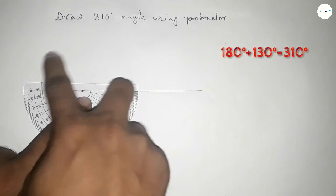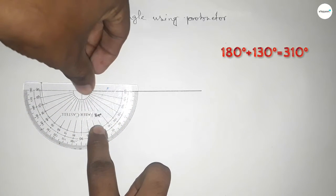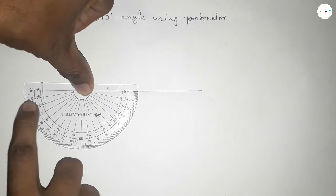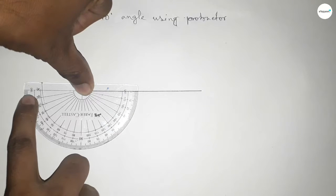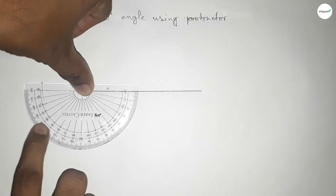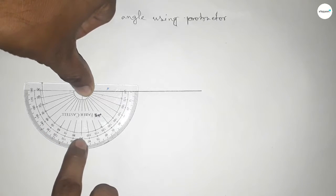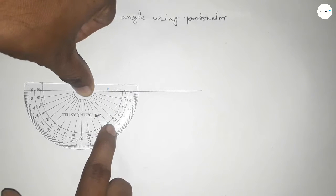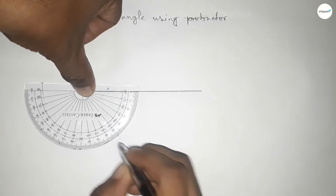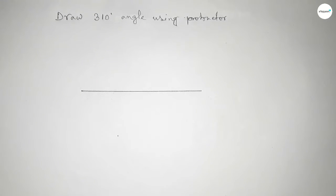This is a 180-degree angle, but we have to draw a 310-degree angle. So if we add 130 degrees with 180: 10, 20, 30, 40, 50, 60, 70, 80, 90, 100, 110, 120, and 130. So if you add 130 degrees with 180, we can get 310 degrees.